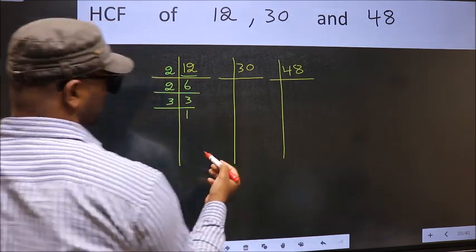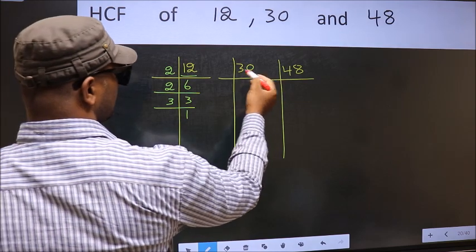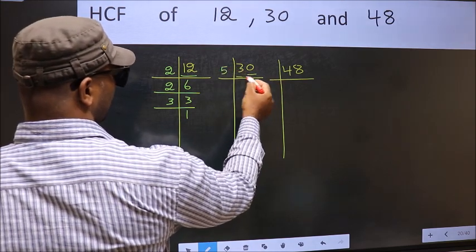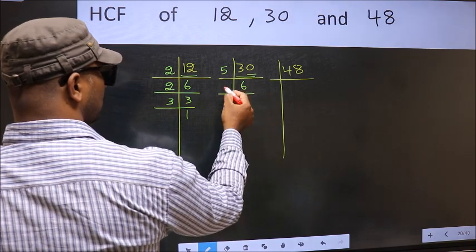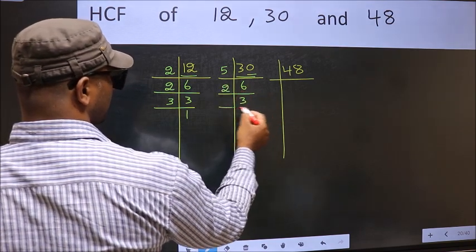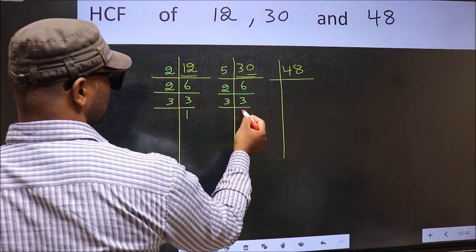Now the other number. Last digit 0 so take 5. When do we get 30 in 5 table? 5, 6, 30. Now 6 is 2, 3, 6. Now 3, 3 is a prime number so 3, 1, 3.